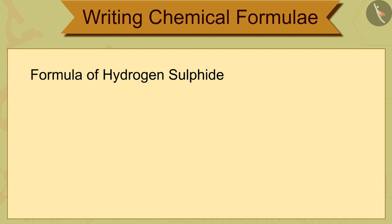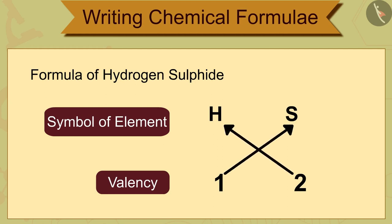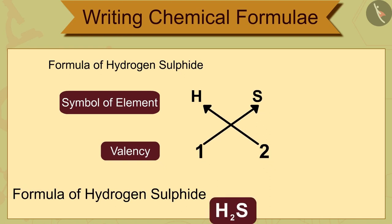when writing formulae for molecular compounds such as hydrogen sulfide, we first consider the constituent elements hydrogen and sulfide. We can write their symbols H and S and valencies 1 and 2 respectively. After that, valencies of compound atoms can be written by crossover, such as H2S.